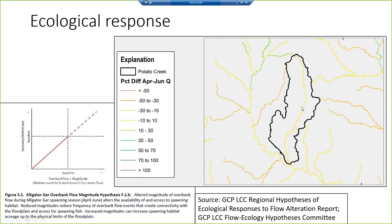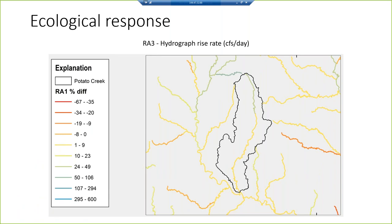Looking at one more statistic — the RA3 rise rate, which measures how fast hydrographs rise on storm flow days — and how fast that is projected to change into the future: this headwater reach, potentially being encroached upon by suburbs of the metro Atlanta area, shows a rise rate increasing potentially 25 to 50 percent.